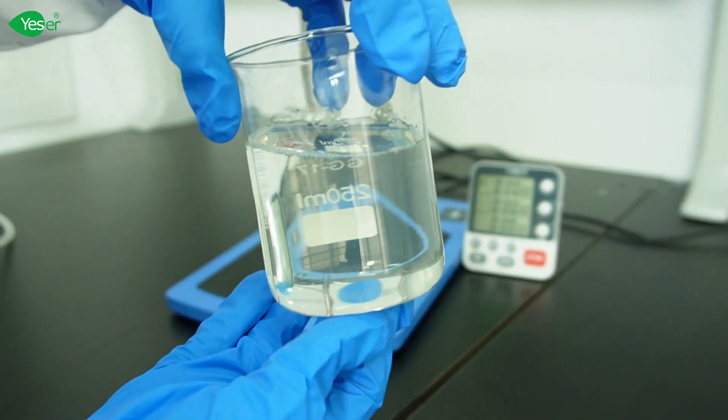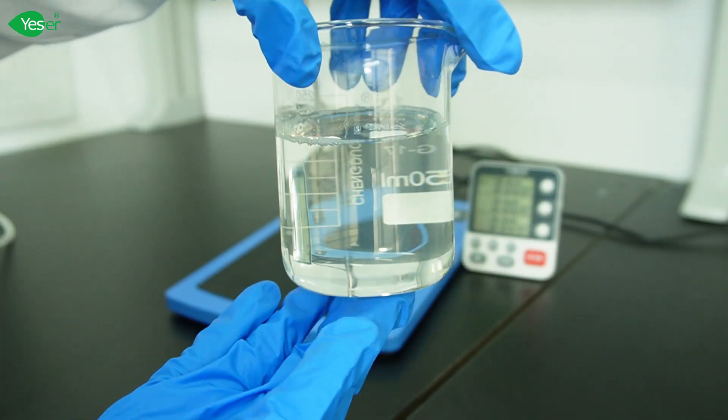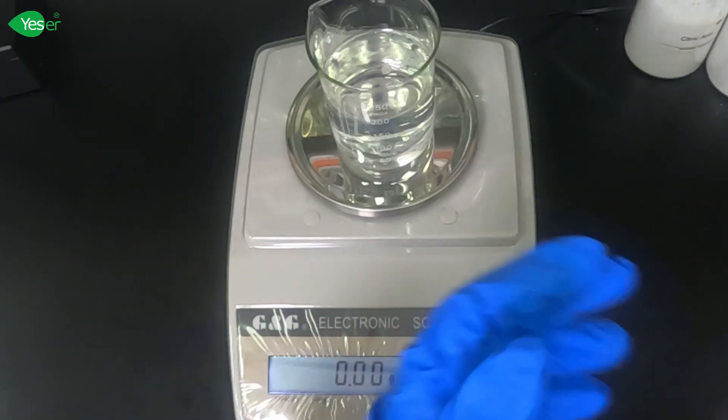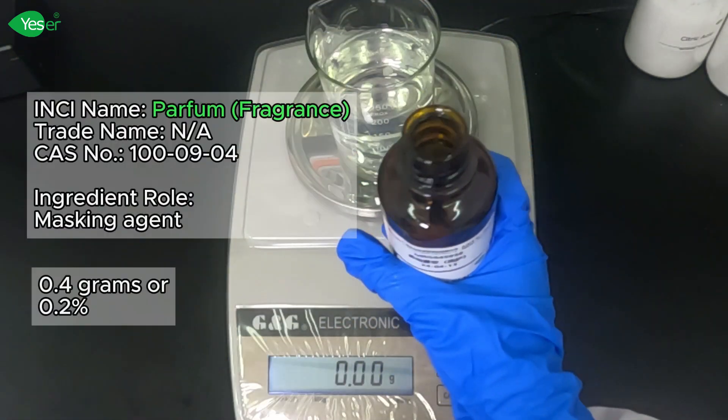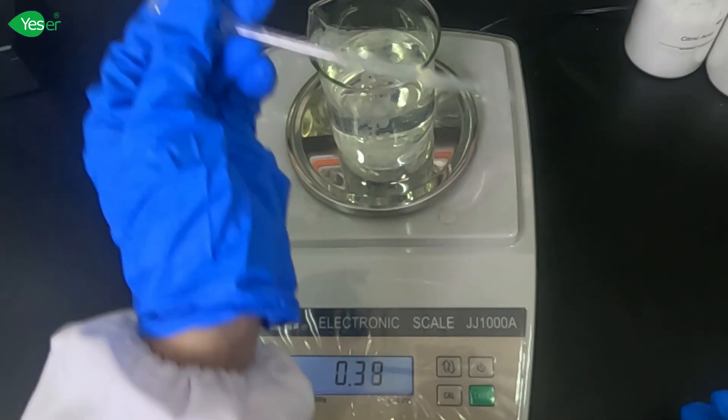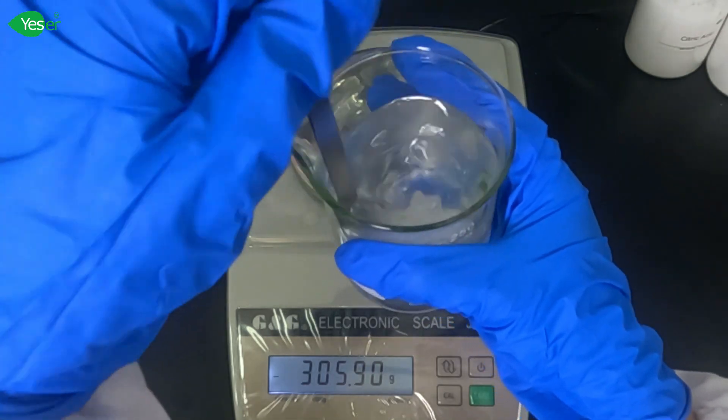Now that our surfactants, conditioning and softening agents are completely dissolved, we will now proceed to our Phase D, which is adding of additives. Let's add our fragrance. We'll weigh about 0.4 grams of this, or 0.2% for our formulation. Let's stir this until it is fully incorporated.